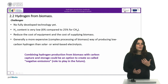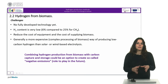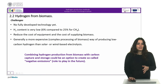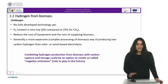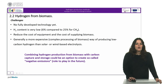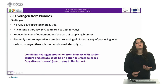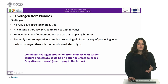However, as long as production and especially transport costs remain at current levels, even with reasonable energy efficiency, hydrogen cannot be economically competitive with natural gas reforming. One option is to convert the biomass in situ into ethanol or bio-oils and transport these products to the reforming plants at relatively low cost because they are liquids. The greatest challenge is to reduce the cost of equipment and the cost of supplying biomass. Finally, the complex processing of biomass means it is generally a more expensive way of producing low-carbon hydrogen than solar or wind-based electrolysis. Combining hydrogen production from biomass with carbon capture and storage could, however, be an option to create so-called negative emissions, which may have a role to play in the future.